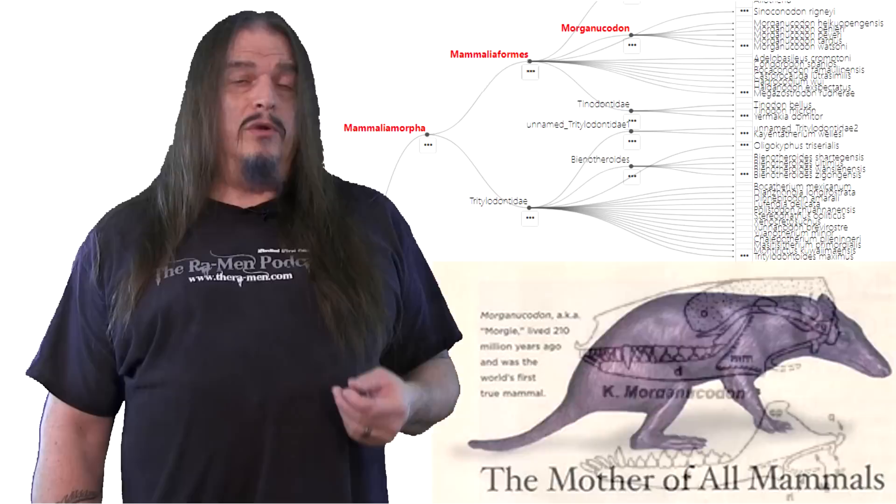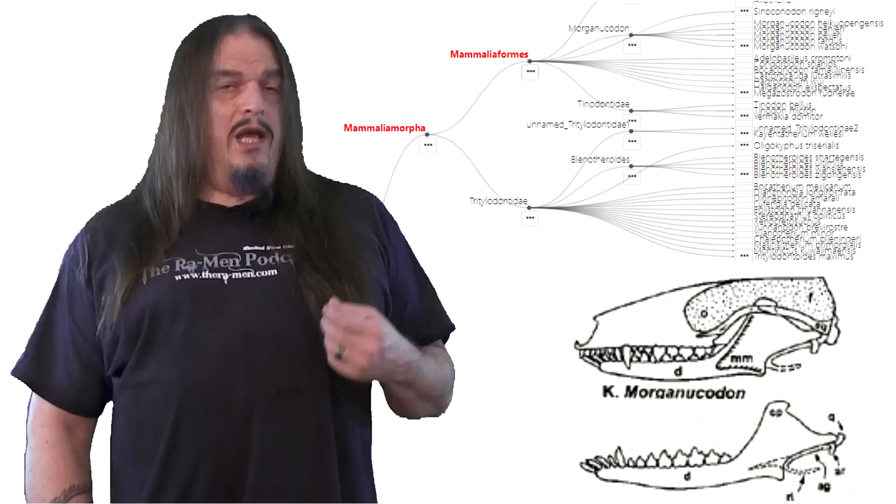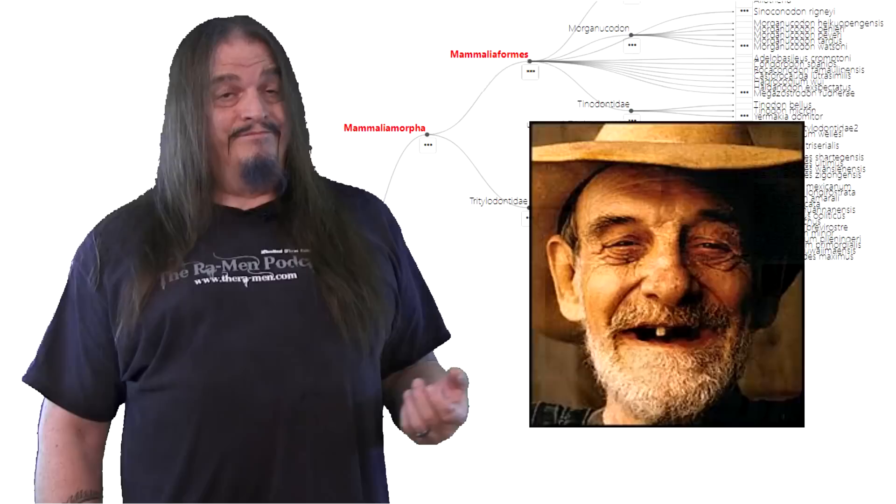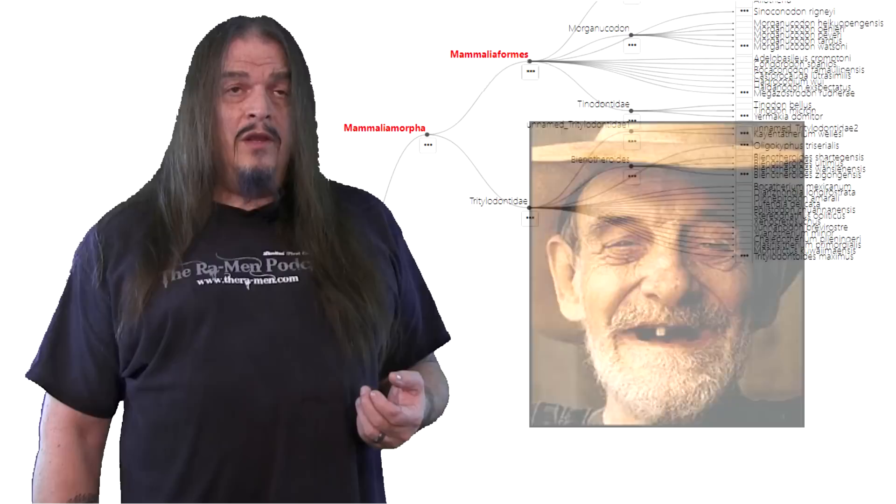But Morganucodon had one more, too, where reptiles, amphibians, and fish might wear a tooth down or break it off and replace it again and again throughout their lives. Mammals are diphodont, meaning they have only one set of deciduous baby teeth to be replaced only once by a single set of adult teeth that you hope are going to be permanent, but very often aren't.